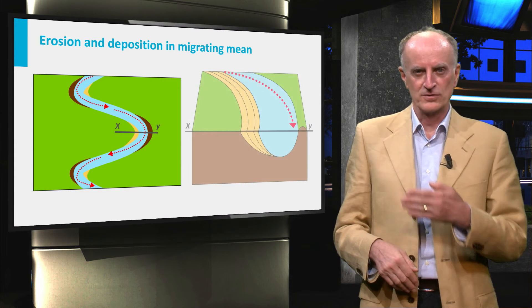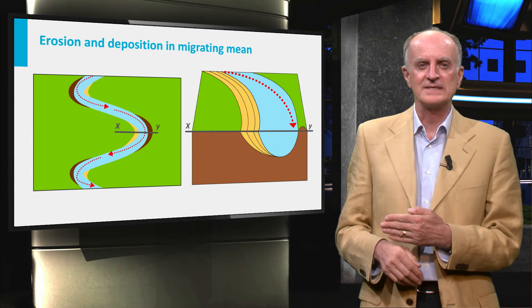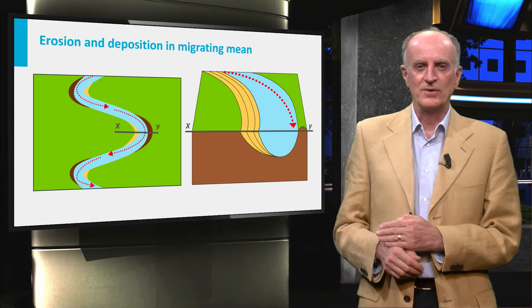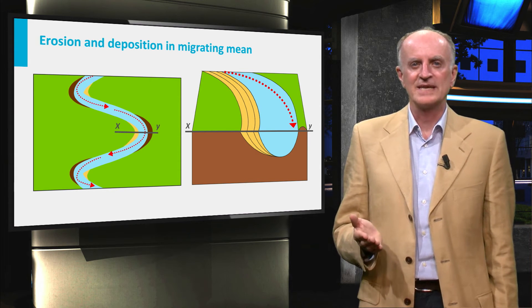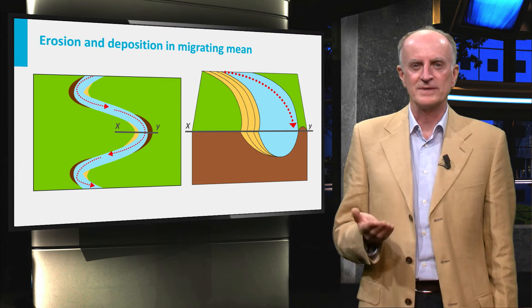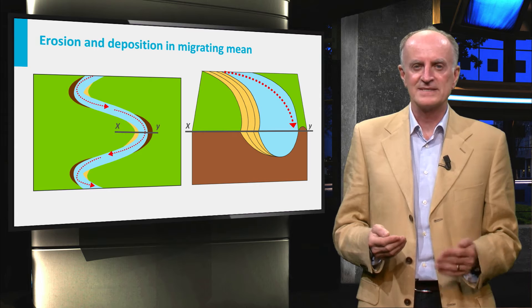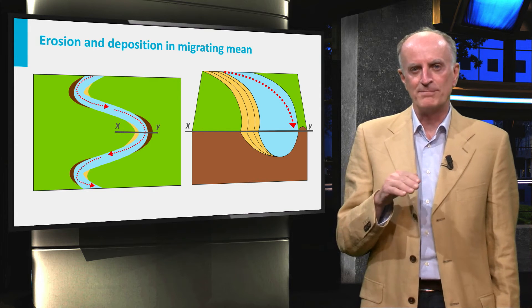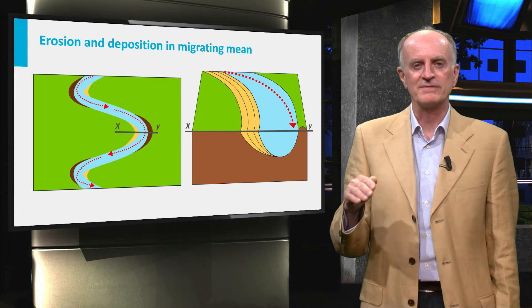In a vertical section through the meander you can see the effects. On the right hand side you can see the sediments being eroded. On the left hand side, sediments are being deposited with beds inclined towards the river bed.